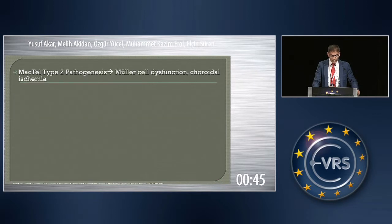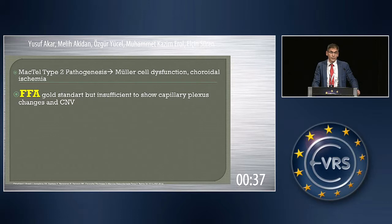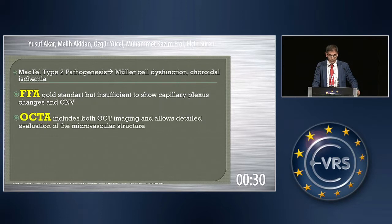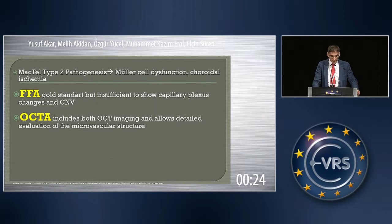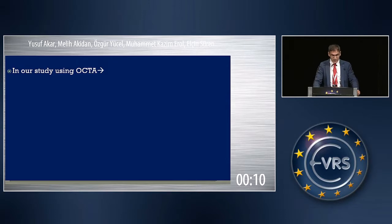As we know, Müller cell dysfunction is the main pathogenesis in macular telangiectasia patients. Up to now, fundus fluorescein angiography has been the gold standard, but it is insufficient to show capillary plexus changes and intraretinal vascularization membranes. OCT-A, on the other hand, includes both OCT imaging and allows detailed evaluation of the microvascular structure. Using OCT-A, early changes, especially in the deep plexus, followed by superficial and choroidal anastomosis, can be detected.